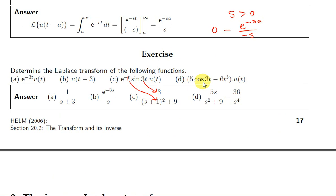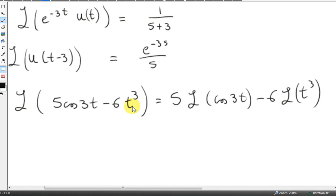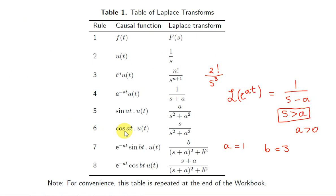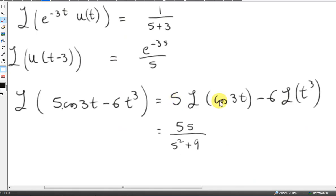Next we want to get L{5cos(3t) - 6t³}. We can use linearity to write it like this. We have 5 times L{cos(3t)}, then we have minus 6 times L{t³}. To get L{cos(3t)}, we look here and replace A with 3. Now again, we haven't proven this one, but we will get s/(s²+3²). That's s/(s²+9). And we multiply the 5 into it, so we get 5s/(s²+9).